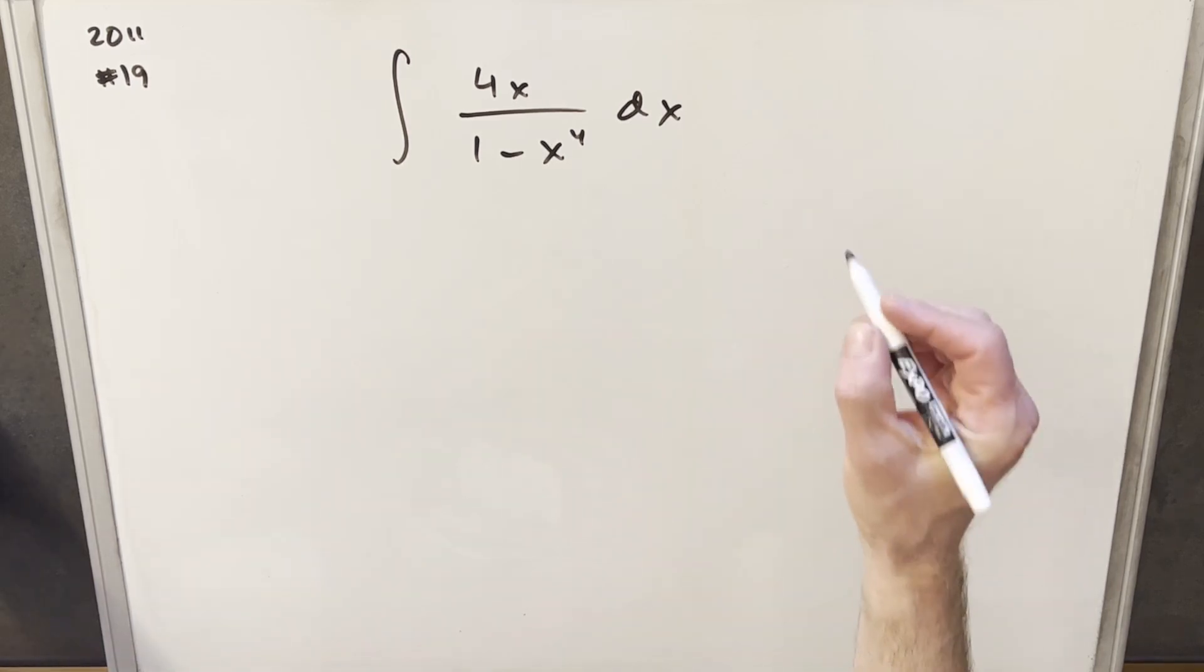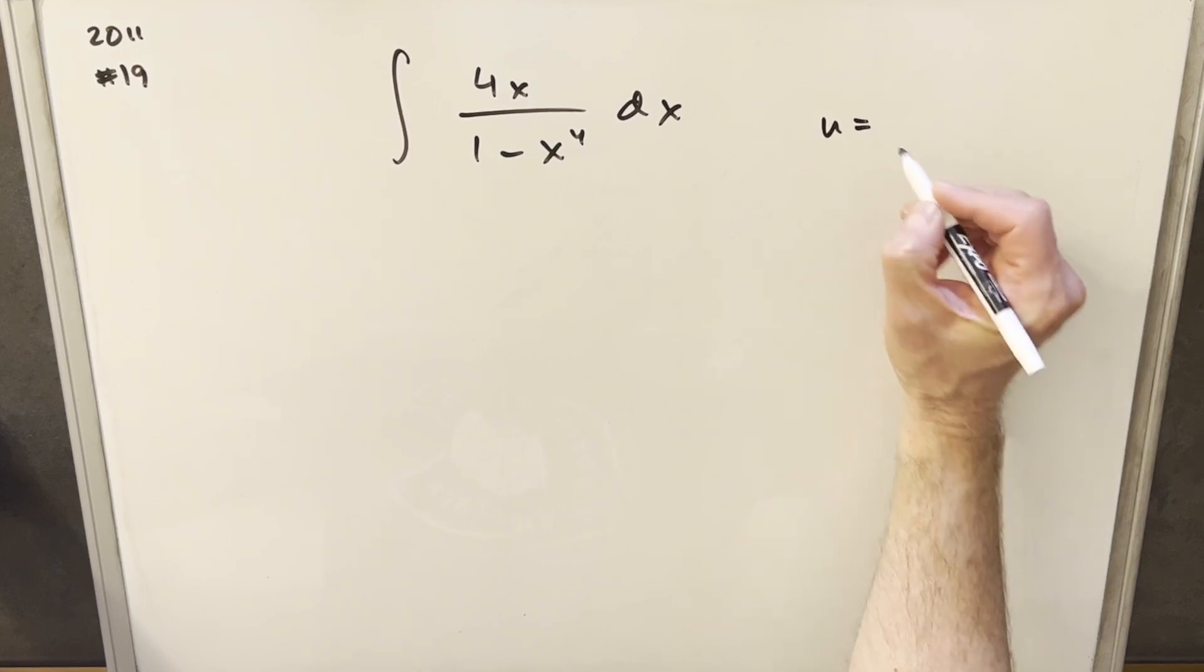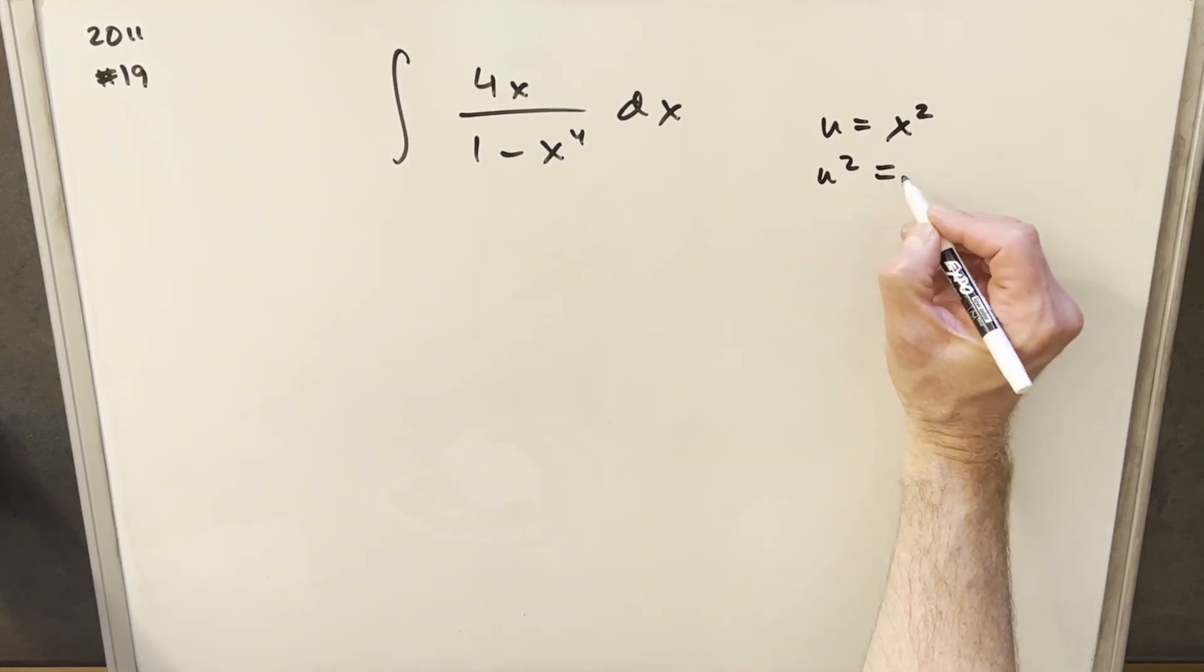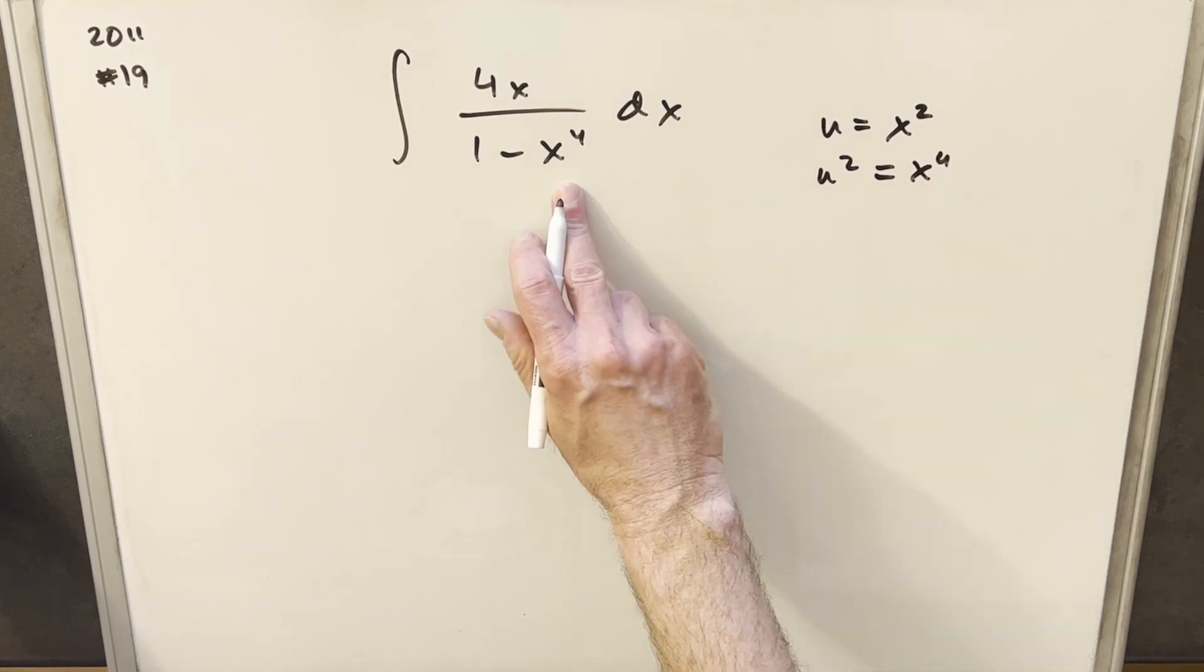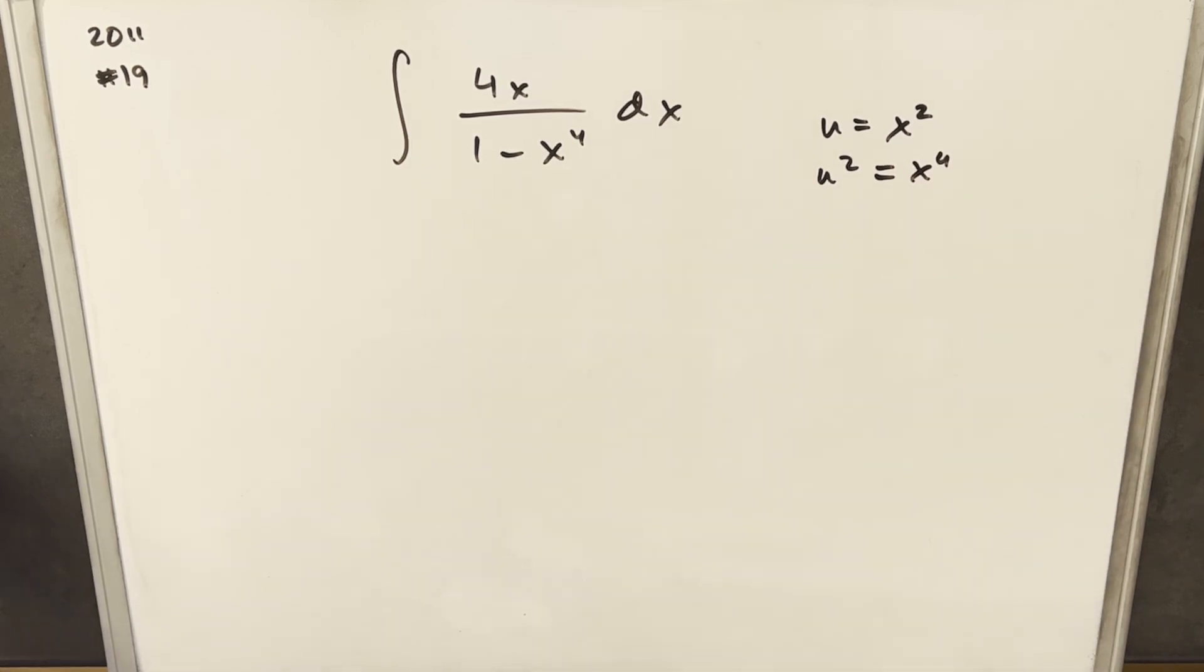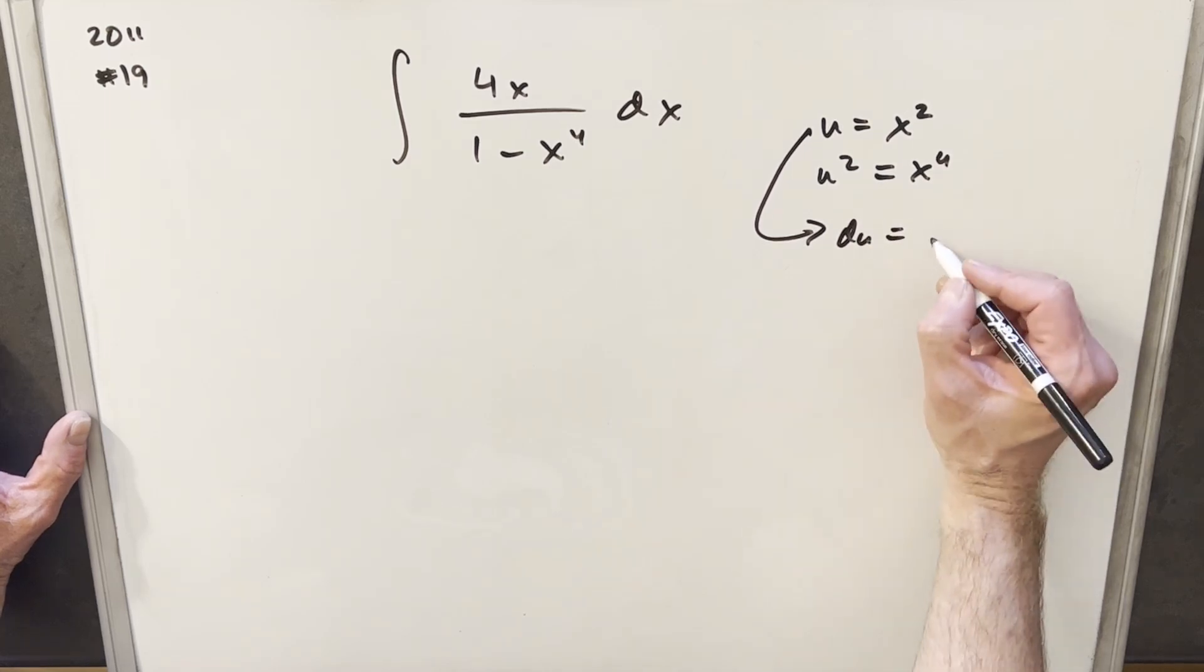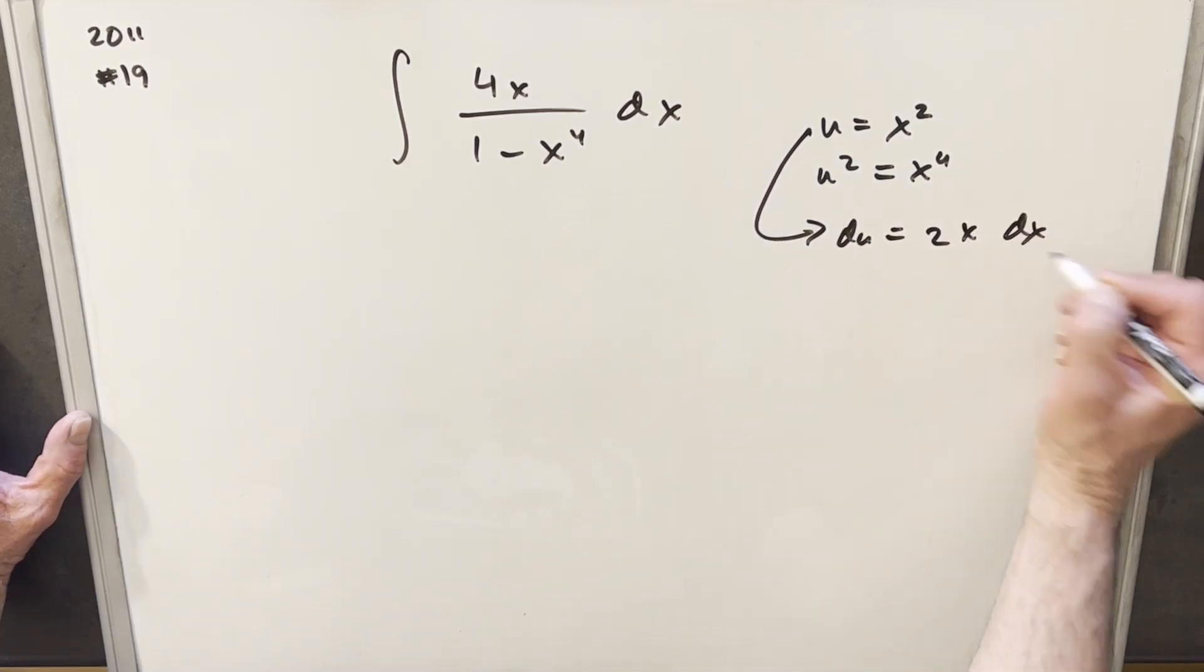What I want to do is a u substitution. So for my u, I'm going to call u equal to x squared, noticing that u squared is x to the 4th. So it's going to kind of give us our square term right there. Now I'll take a derivative to find my du. So du is just going to be 2x dx.